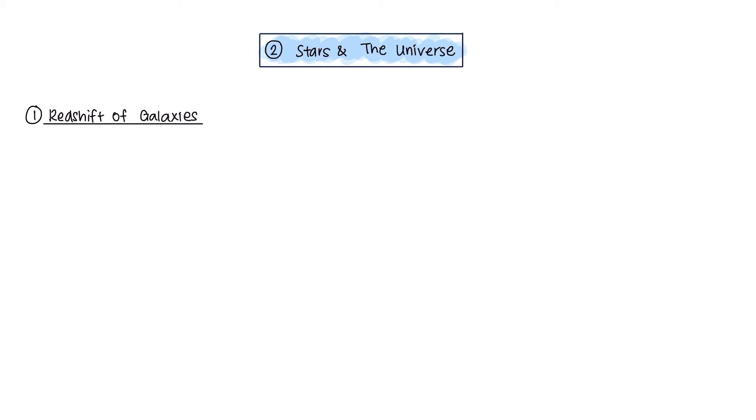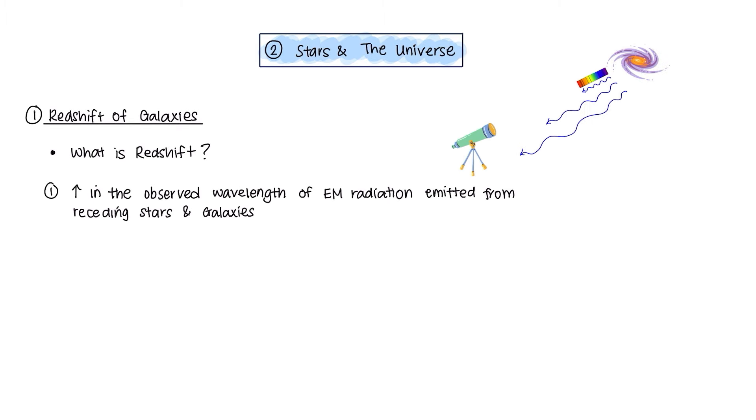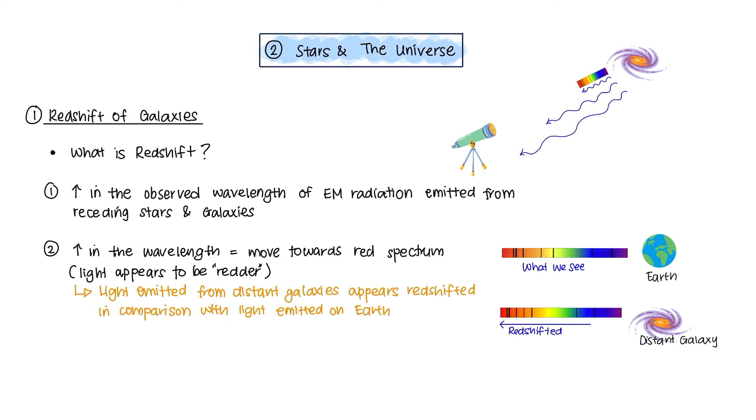Let's look into redshift of galaxies first. But what is redshift? It is the increase in the observed wavelength of electromagnetic radiation emitted from receding stars and galaxies. Increase in visible light wavelength equals to move towards red end of spectrum, whereby the light appears redder. The light emitted from distant galaxies appears redshifted in comparison with light emitted on Earth. So, the galaxies furthest away are redshifted the most. This indicates that the galaxies are moving away from Earth. If the galaxies are moving away from Earth, it means that it supports the evidence of the universe expanding.